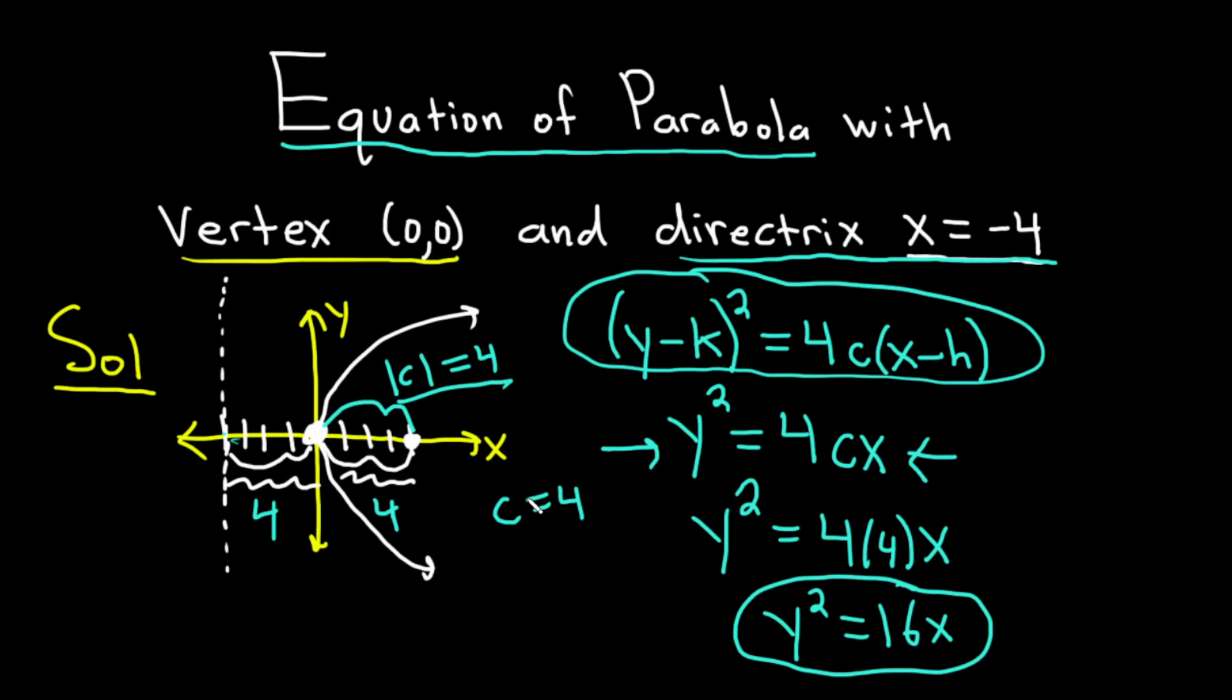And then at this point, we used the picture to see that the distance between the vertex and the focus is 4. That's the absolute value of c. So the absolute value of c is equal to 4. Because it opens right, c is equal to 4. If it had opened left, c would be equal to negative 4. Then you just take your value of c and you plug it into your equation. So we get y² equals 4 times 4 times x. So y² is equal to 16x. And that's the final answer.